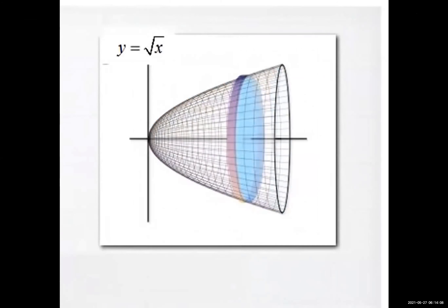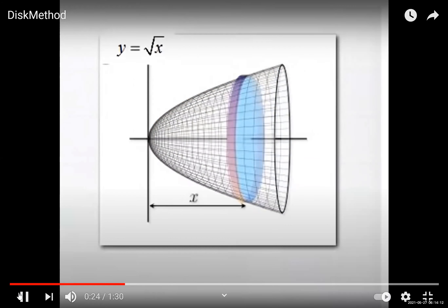How can we do that? We just slice the solid into small pieces, and each slice is just like a disk — like a DVD. We know how to find the volume of a disk. Since there are many disks combined to form the solid, we find the volume of each disk, sum them all up, and that gives us a Riemann sum.